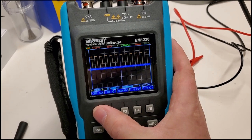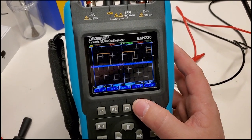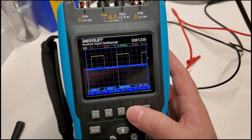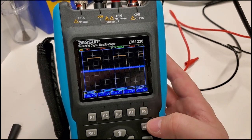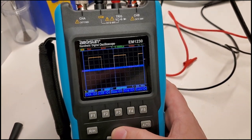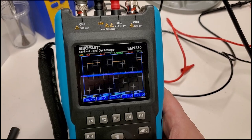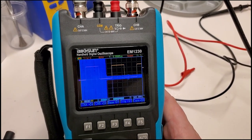You see right here, I can select channel A channel B. It took me a second to figure out the triggering, which is right here on this button. So you press the trigger and then you press the arrows up and down. You can see I'm moving the trigger right there. Okay.